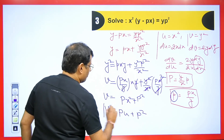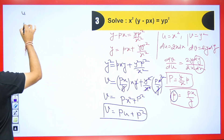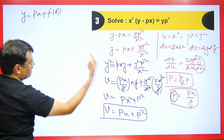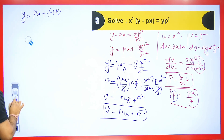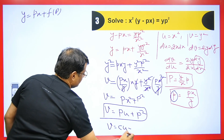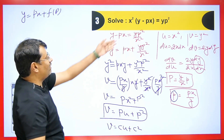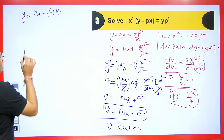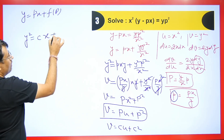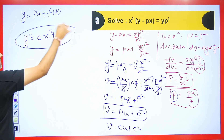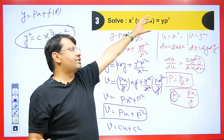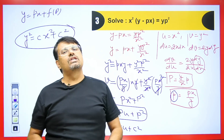Now we can easily solve it: wherever there is P, replace it with c, giving v = cu + c². Now substitute back the values of v and u: v = y² and u = x². Therefore: y² = cx² + c². This is the final solution obtained using the transformation method for this first order higher degree differential equation.